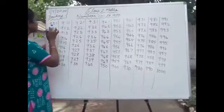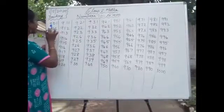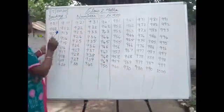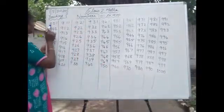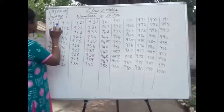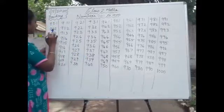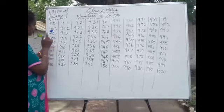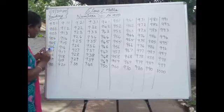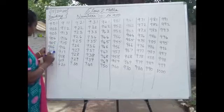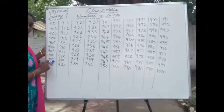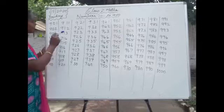Next we are going to learn from 901 to 1000. First we will start with 901. Please repeat after me. 901, 902, 903, 904, 905, 906, 907, 908, 909, 910.